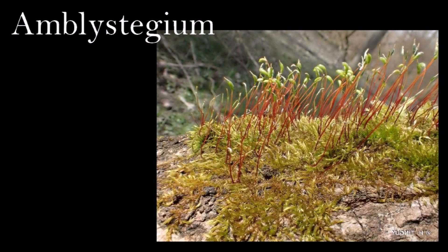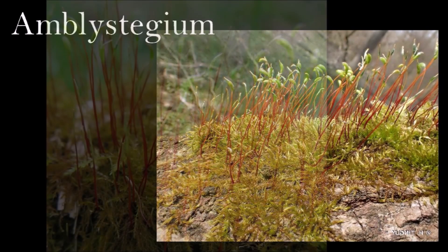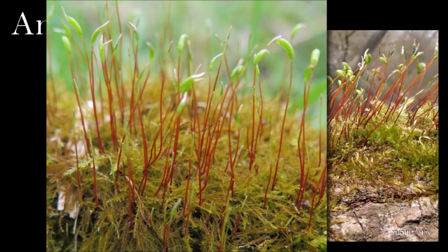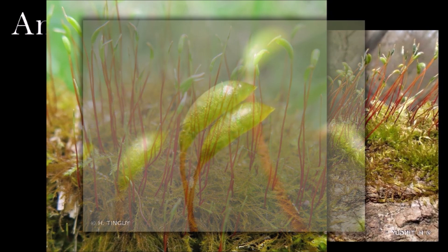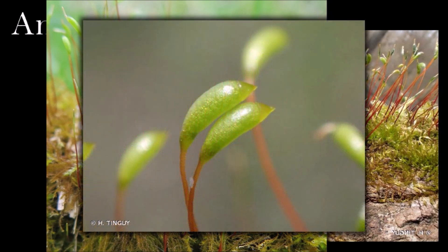This creeping moss has tapering leaves that end in fine points. It grows and divides irregularly and horizontally to form a mat of interlocking filaments. There are about 15 species and all prefer moist temperate climates. The earliest record of fossil Amblystigium is in the early Neogene of southern Germany, and there are a number of records of it in the Quaternary.